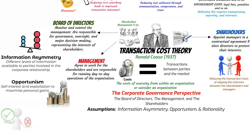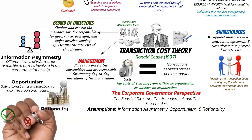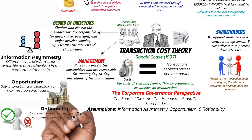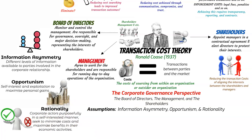The third assumption, rationality, implies that parties involved in transactions are rational decision-makers. They seek to minimize transaction costs and maximize their utility or benefits. In corporate governance, understanding rational behavior is crucial for designing governance structures that align interests, incentivize performance outcomes, and promote efficient decision-making.